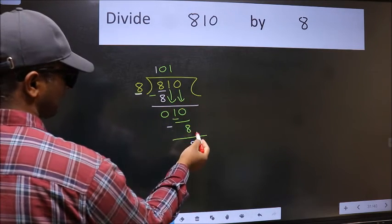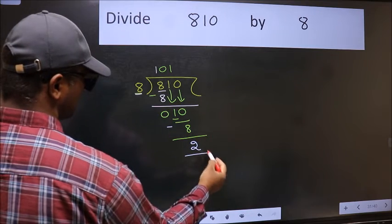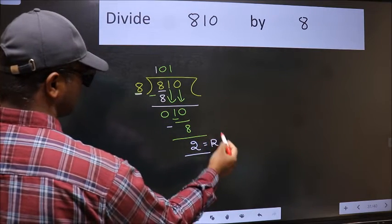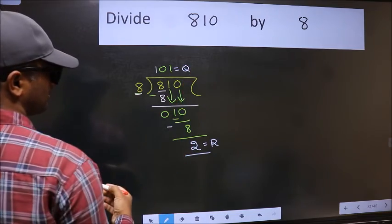No more numbers to bring it down. So we stop here. This is our remainder and this is our quotient. Thank you.